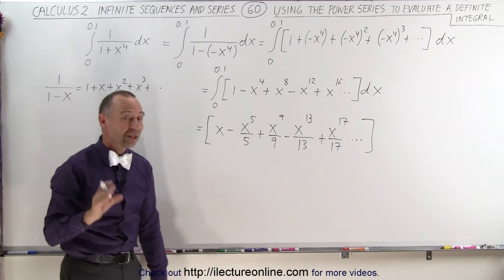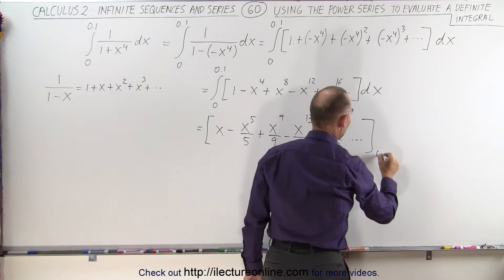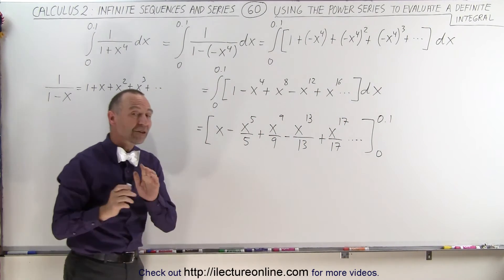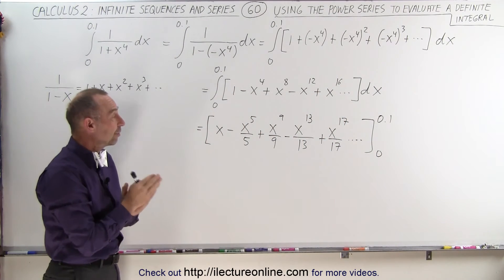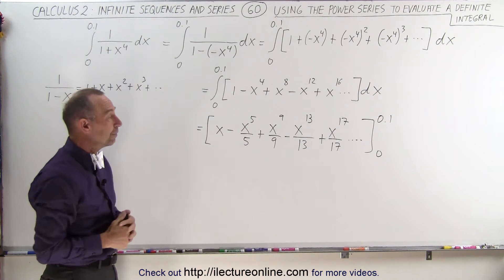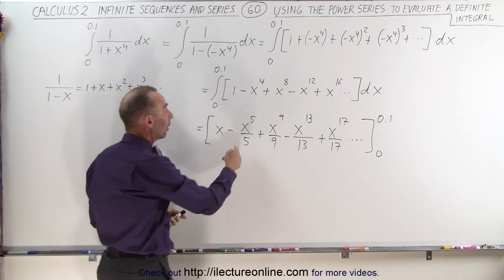And of course then we still need to evaluate every one of these terms from 0 to 0.1. Now notice that this infinite series will converge for values of x less than 1, or for absolute values of x between negative 1 and 1.